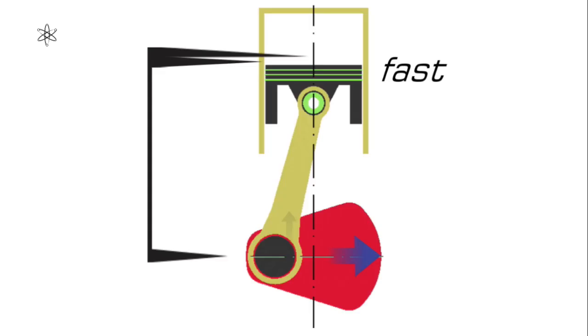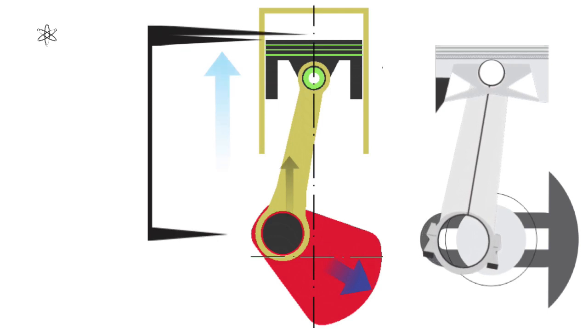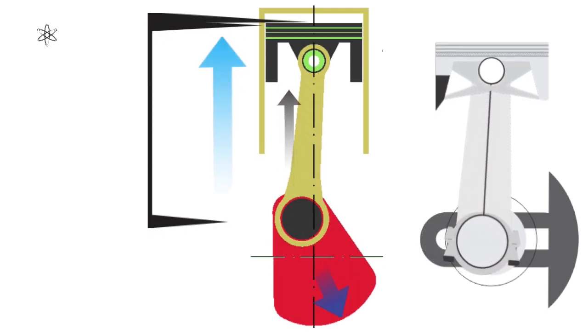Now let's see what happens when the crank angle moves towards the top dead center. The crank is now straightening the connecting rod. The reverse effect is now taking place.